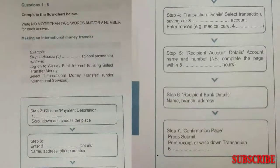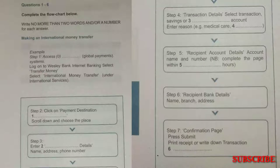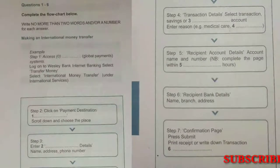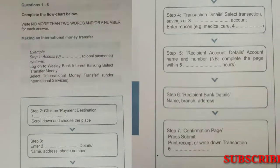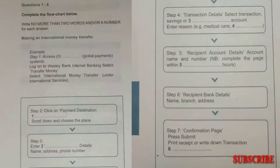Good. First, you have to log on to Wesley Bank Internet Banking and select Transfer Money. Okay. Once you've done that, select International Money Transfer. I don't see it... It's the first option under the heading of International Services. Right, I've found it. Now click on Payment Destination Country and scroll down to the location you wish to send money to. It's all in alphabetical order. Zimbabwe. I've got it, right at the bottom.